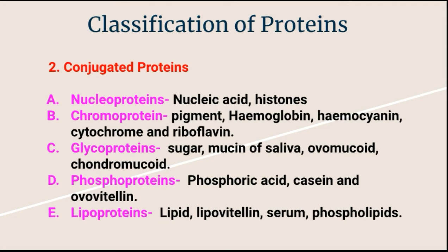Today we will discuss the following types. There are five types: the first one is nucleoprotein, second one is chromoprotein, third one is glycoprotein, fourth one is phosphoprotein, and fifth one is lipoprotein. What is the nucleoprotein? In this type of conjugated protein, the protein is combined with nucleic acid.